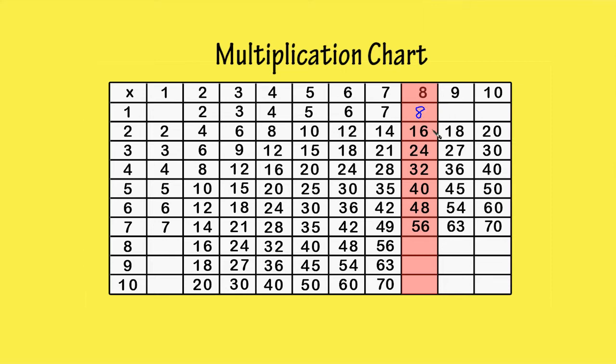8 times 1 is 8. The next 6 boxes are already filled in from when we did the other times tables, so that makes our job easier.